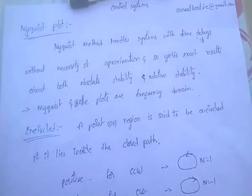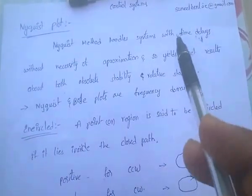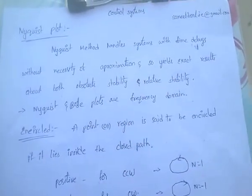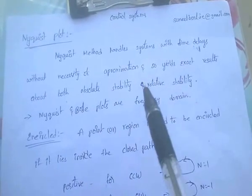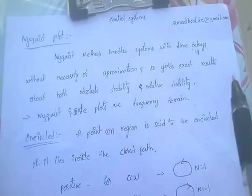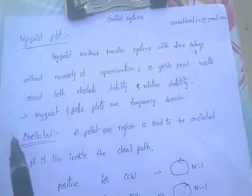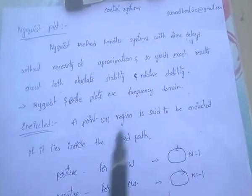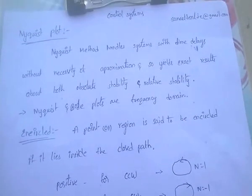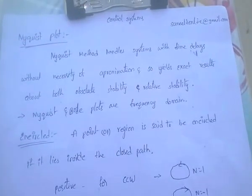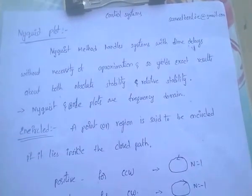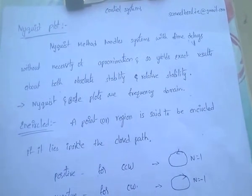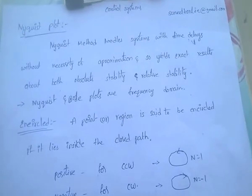The Nyquist method handles systems with time delays without the necessity of approximation. So it yields exact results about both absolute stability and relative stability.